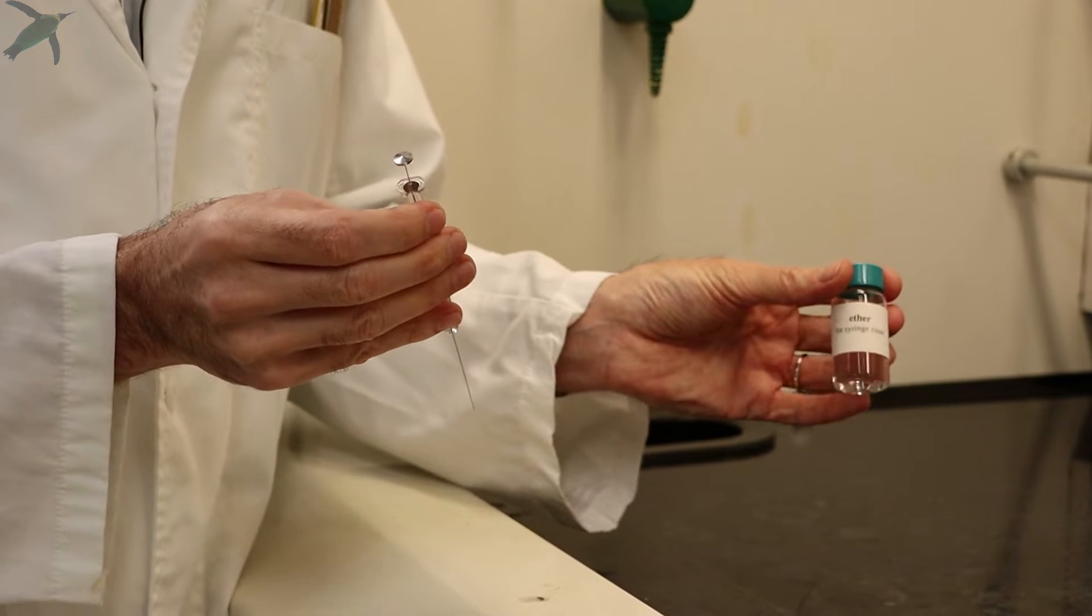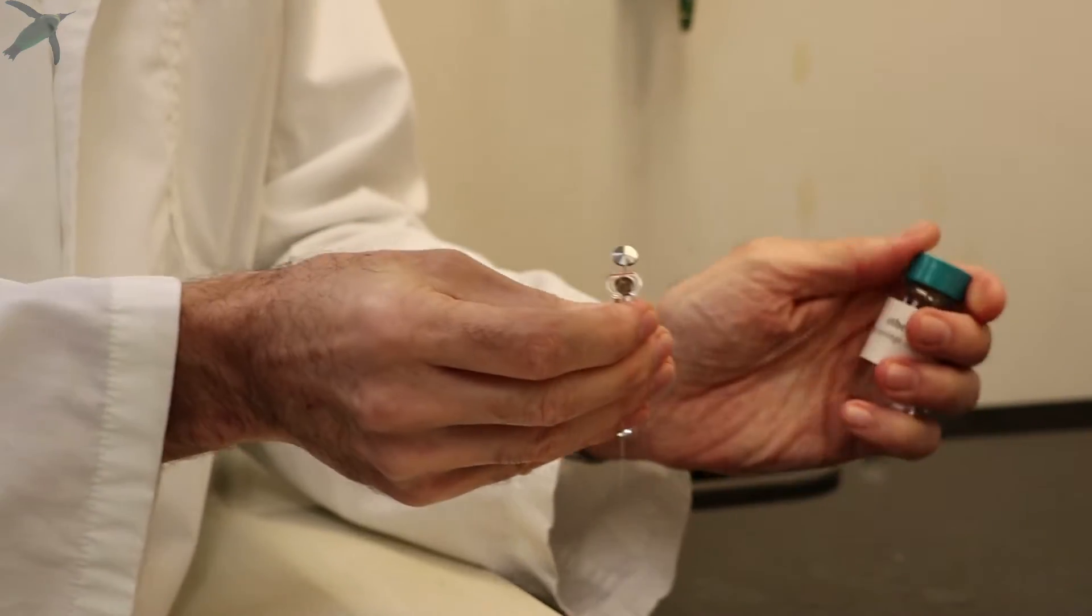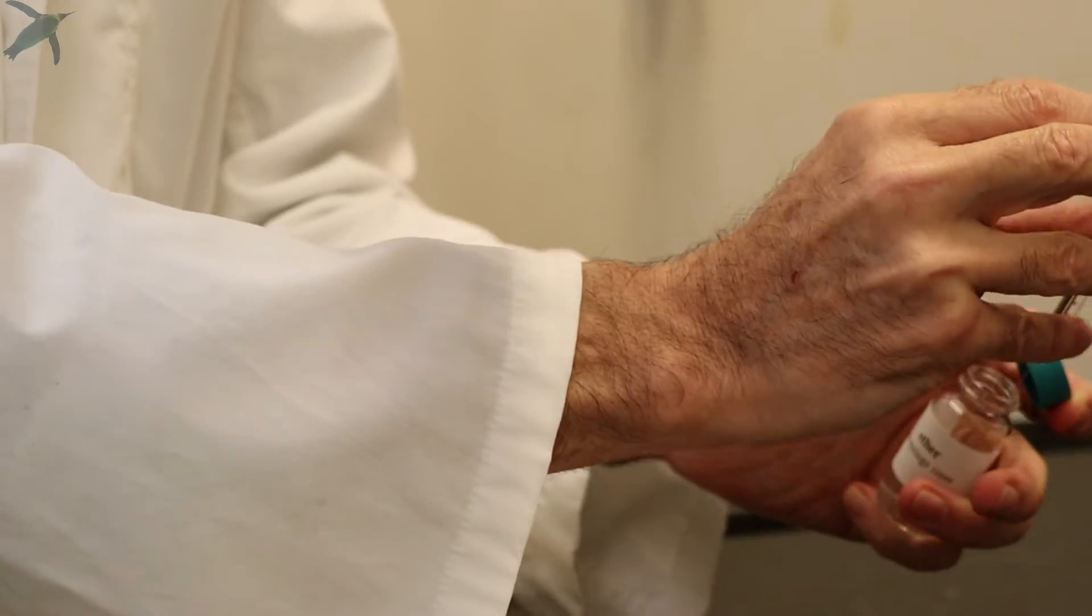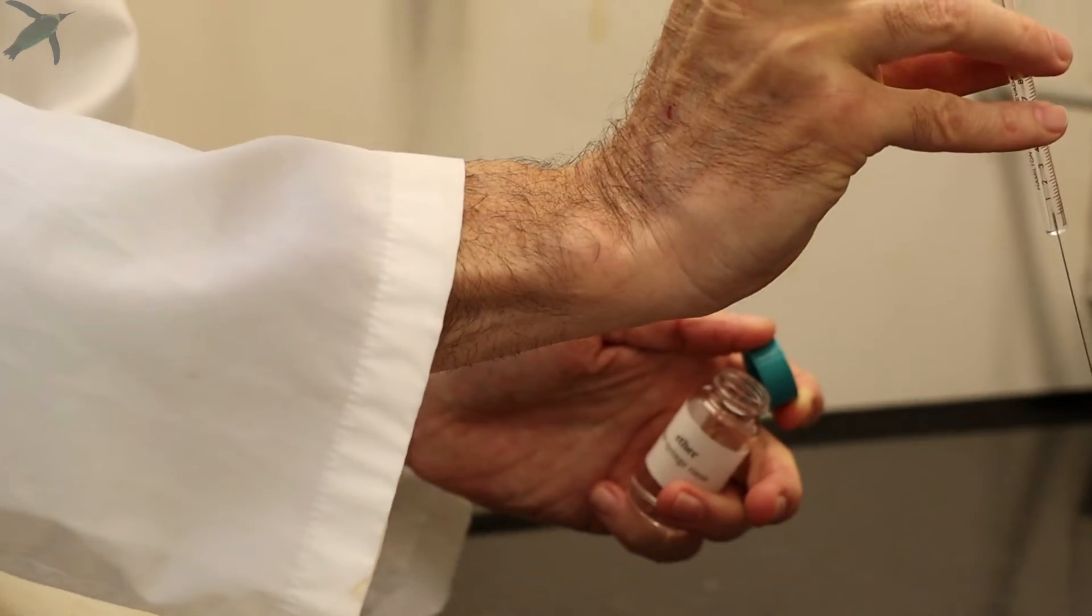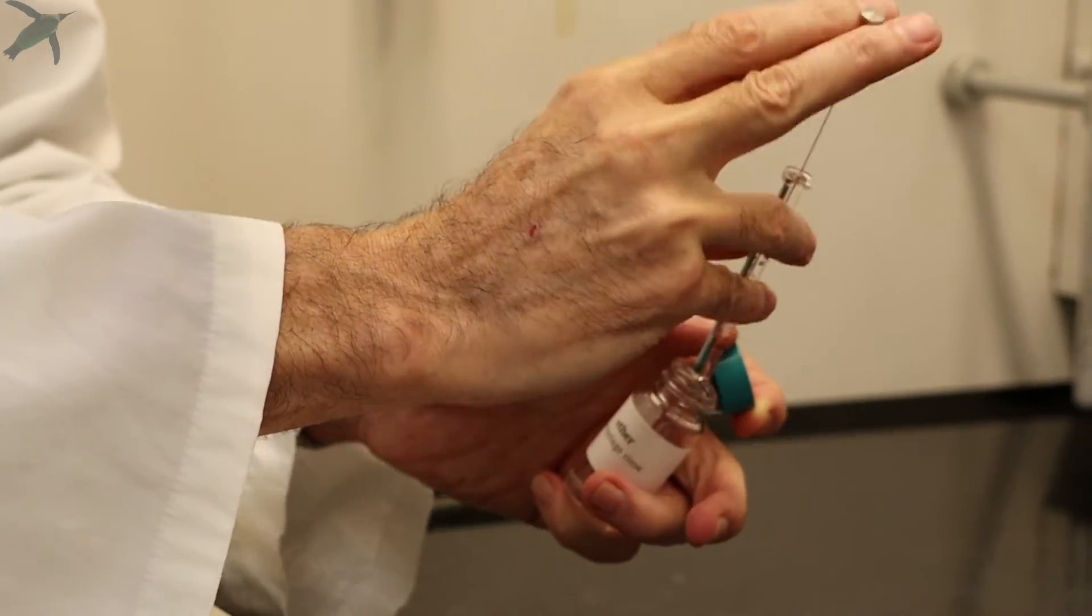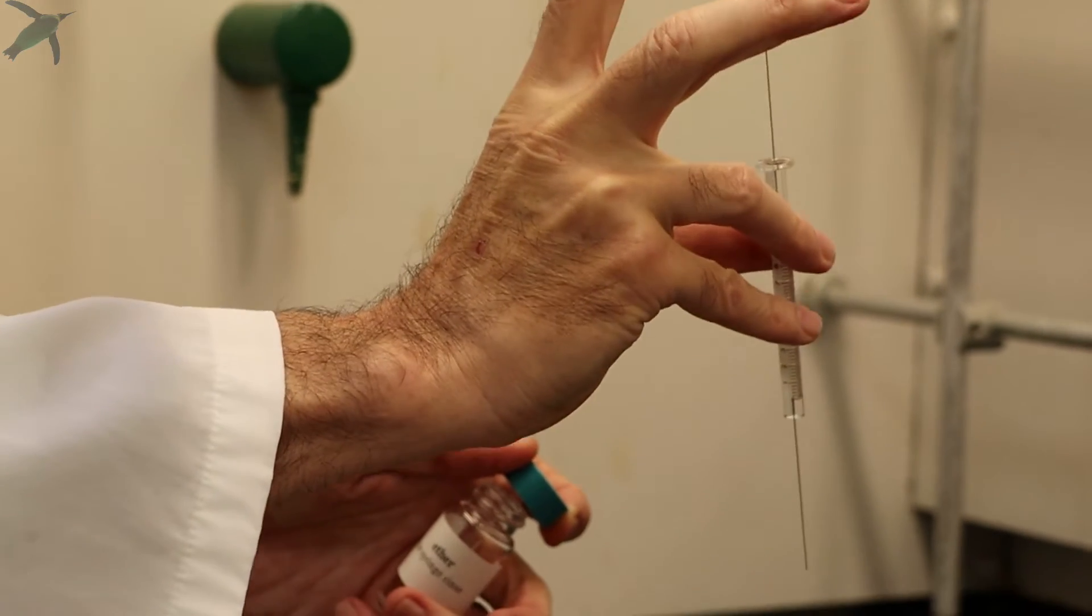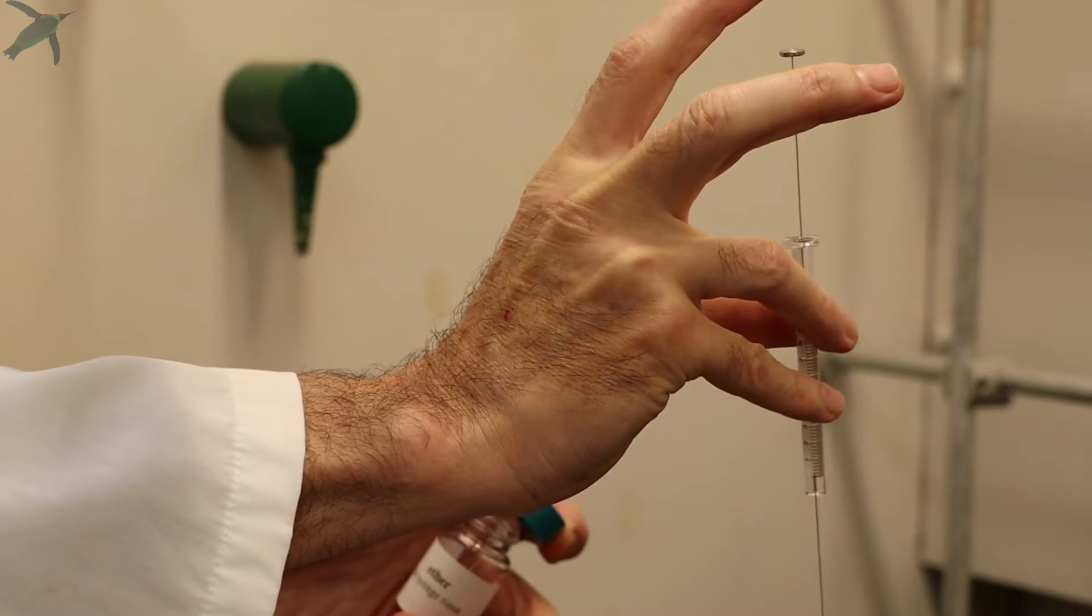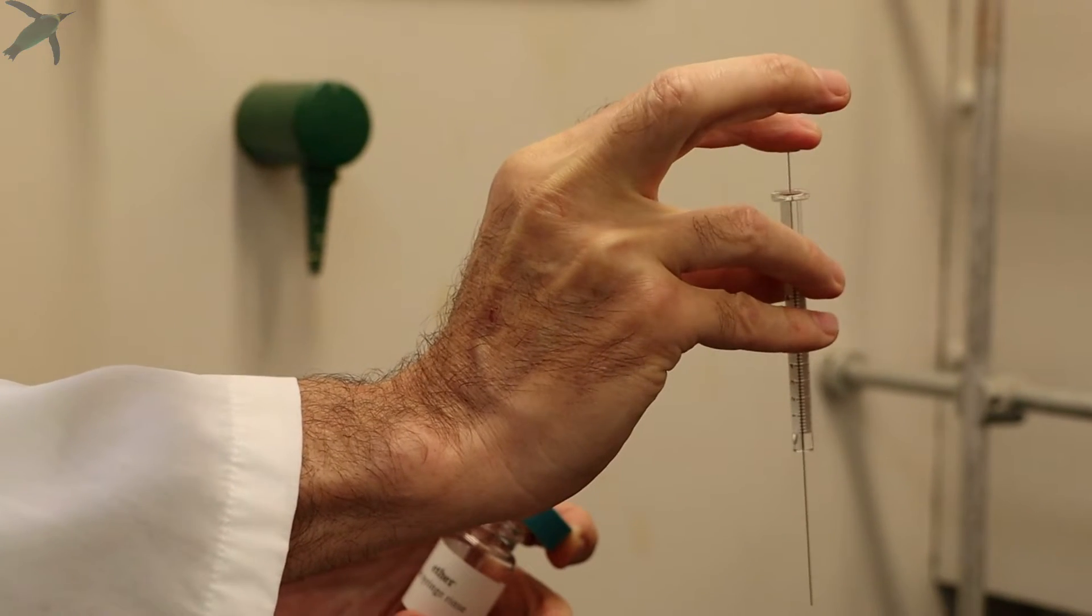So you rinse the syringe with ether a few times, and just out of safety you want to do this in the hood. You open the container, draw some ether, and you can eject it in the hood. Make sure when you push the plunger down to do it quickly but gently so you don't bend the plunger.